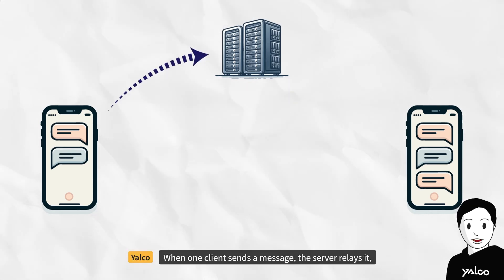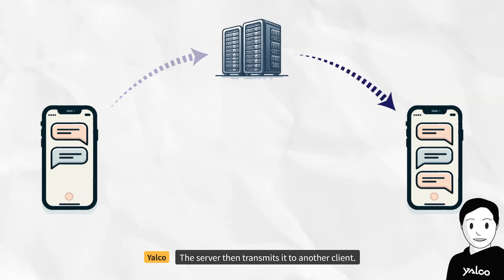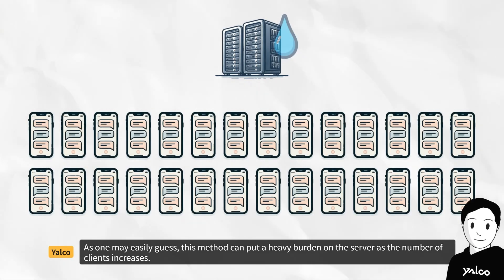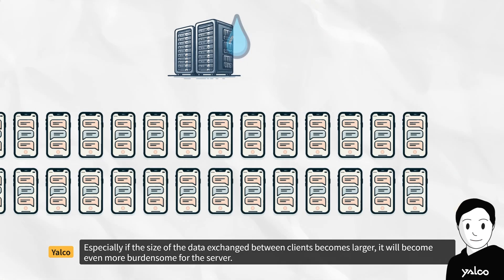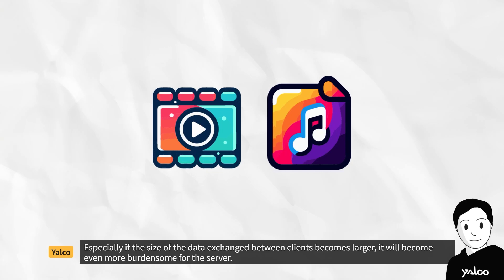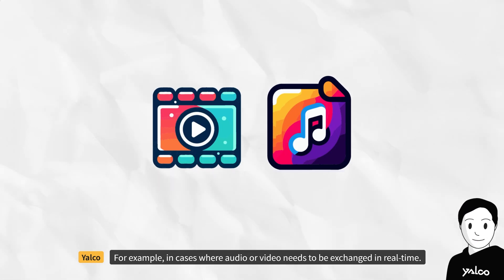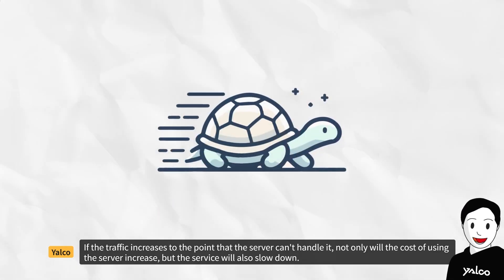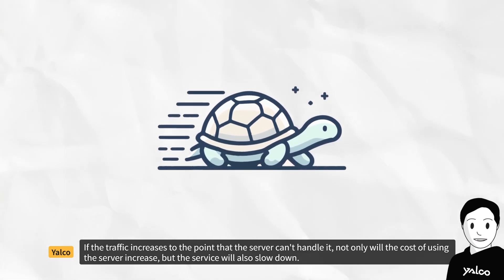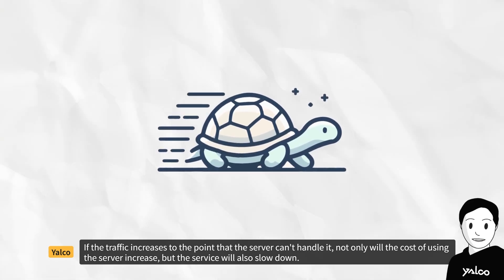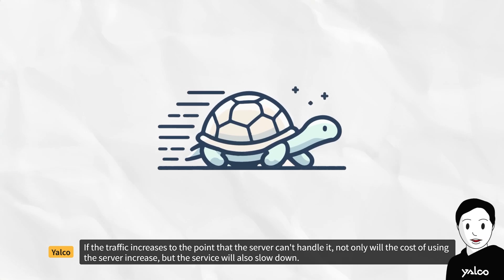When one client sends a message, the server relays it and then transmits it to another client. As one may easily guess, this method can put a heavy burden on the server as the number of clients increases. Especially if the size of the data exchanged between clients becomes larger, it will become even more burdensome for the server — for example, in cases where audio or video needs to be exchanged in real-time. If traffic increases to the point the server can't handle it, not only will the cost increase, but the service will also slow down.